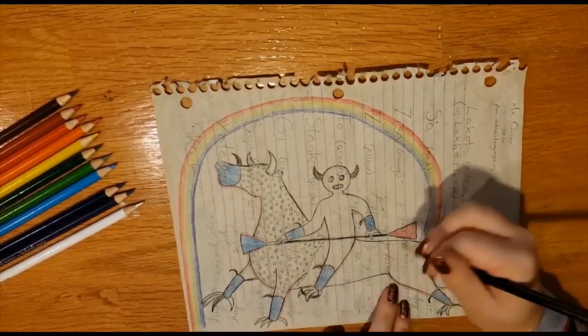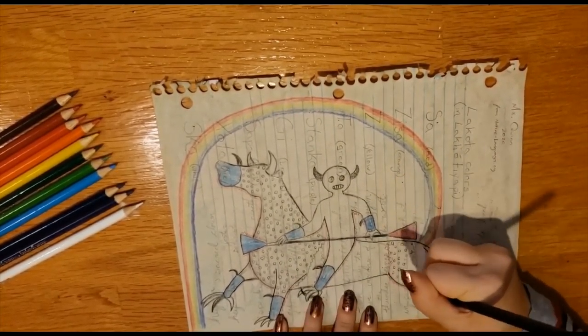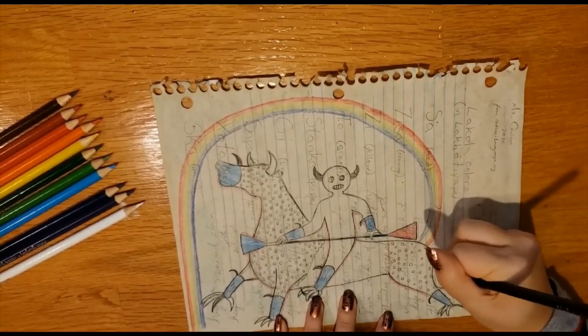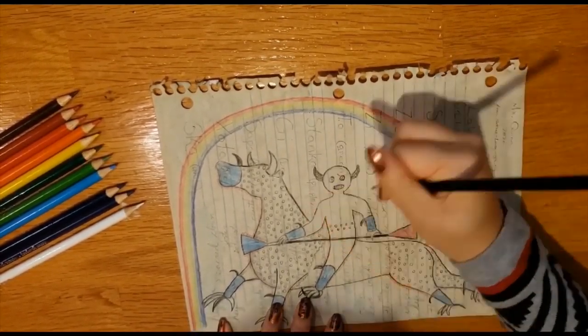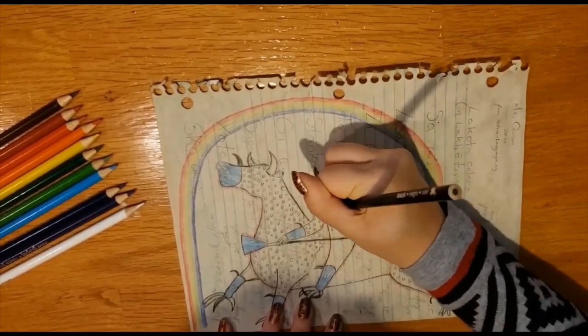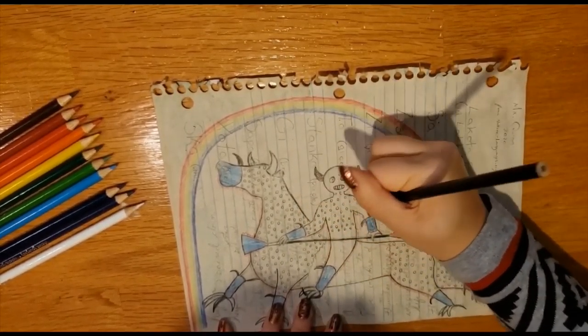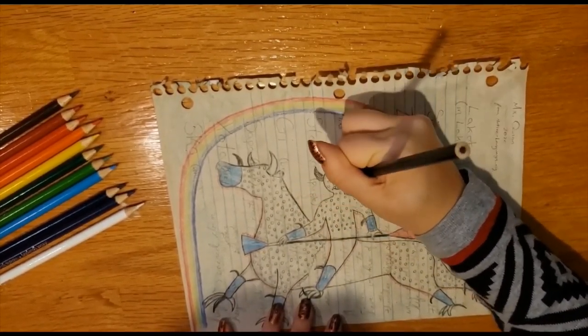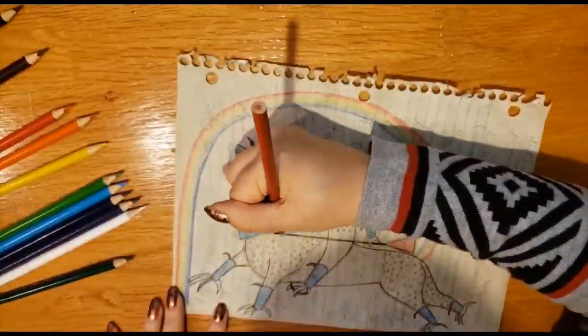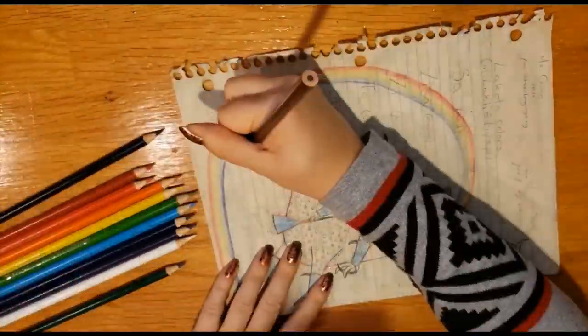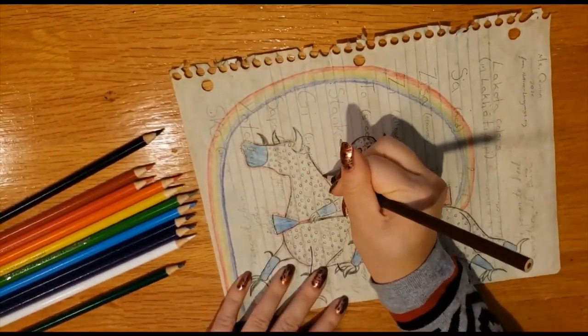Heoka bring attention to what's normal by doing things differently. They might shiver and bundle up when it's hot, wear their clothes inside out, or talk backwards. They are allowed to break the rules. Sometimes this helps to reinforce why the rule is important. But it can also point out how a rule might be silly and need to change.